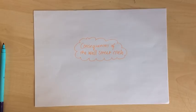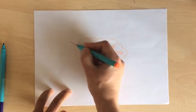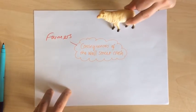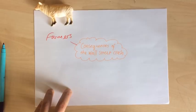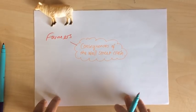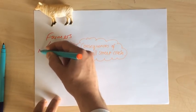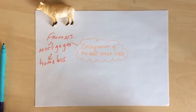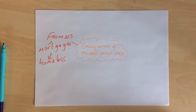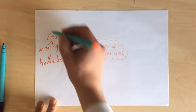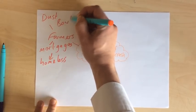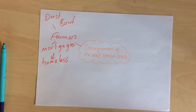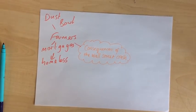Now that we've done the causes, we need to look at the consequences of the Wall Street Crash. The first group is farmers. Farmers were quite negatively affected — unfortunately they were also quite negatively affected during the economic boom. In the Wall Street Crash, there are two main problems: first, they cannot afford their mortgages, so they end up homeless because the bank repossesses their farm. Just to make that even worse, you also have the Dust Bowl going on at the same time — land has been over-farmed, weather conditions are very dry, and farmers can't grow anything, so even those who've still got their farm quickly run into financial problems.